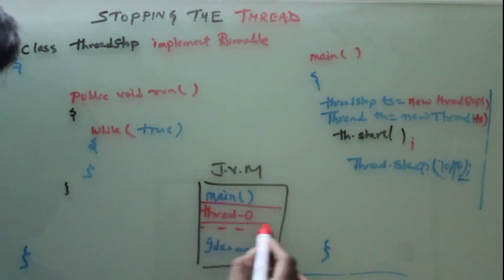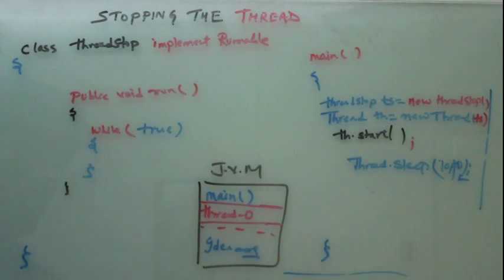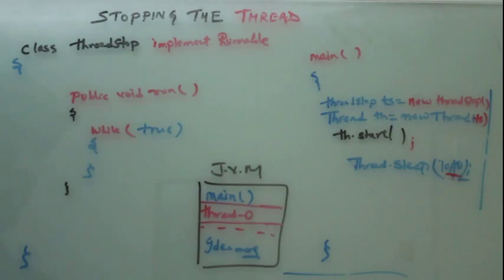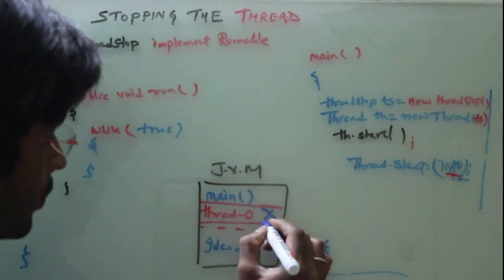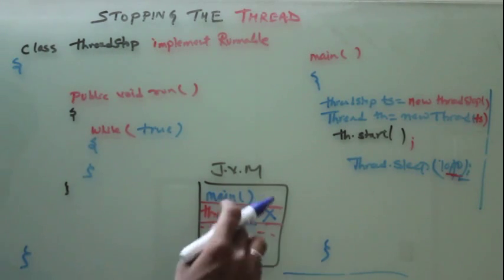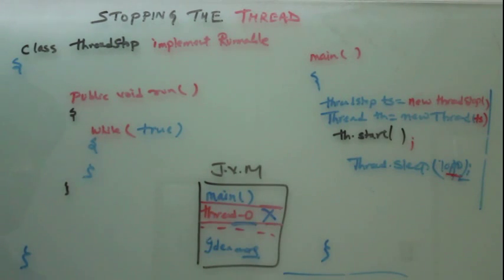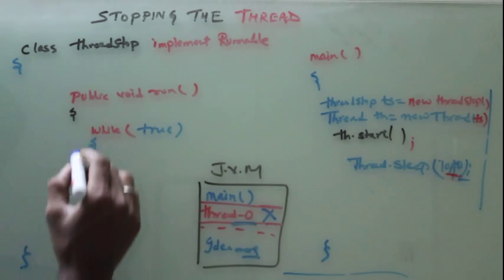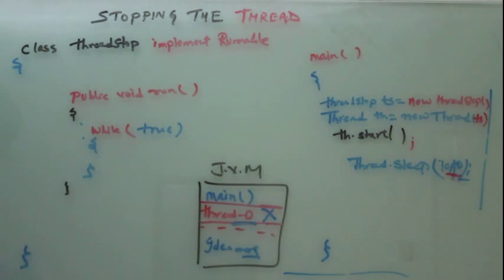So what will happen in JVM? In JVM, both main and thread, these two threads will run for this much seconds. So we have to stop this thread, thread zero. So how to stop this thread? Stopping this thread means we have to take over control of this loop, this while loop.